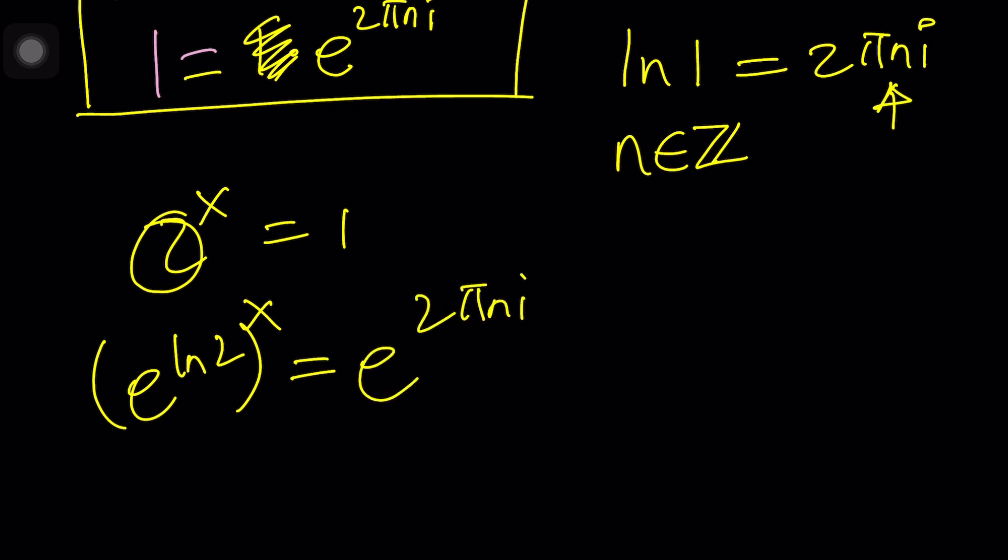You can also think of it this way. If you have z to the power w, z and w are complex numbers, this can also be written as e to the power w ln z. And you got to remember, this is called the complex logarithm. But, because ln z is multi-valued, z to the w is also multi-valued. So, there is no single value. That's why we can write one in infinitely many forms.